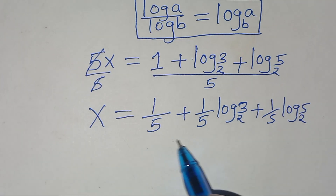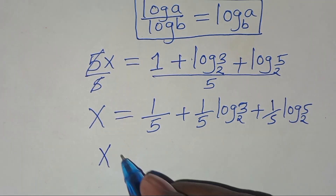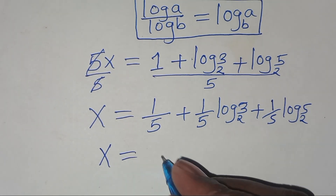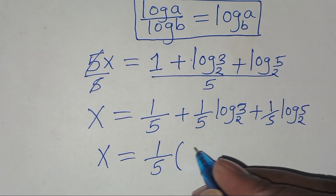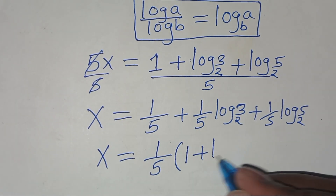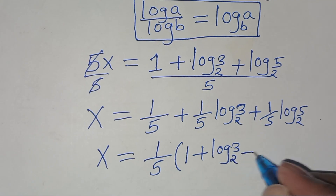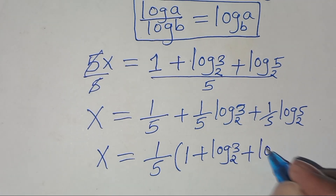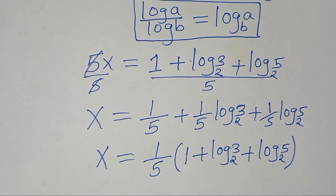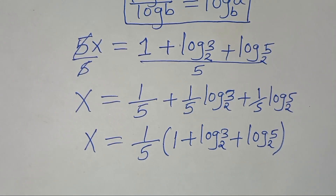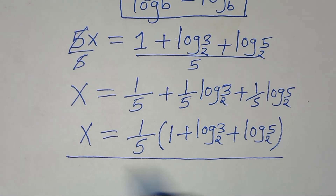Since 1 over 5 is common, we can express x as (1 over 5) times the bracket: 1 plus log 3 to base 2 plus log 5 to base 2. This is the value of x.